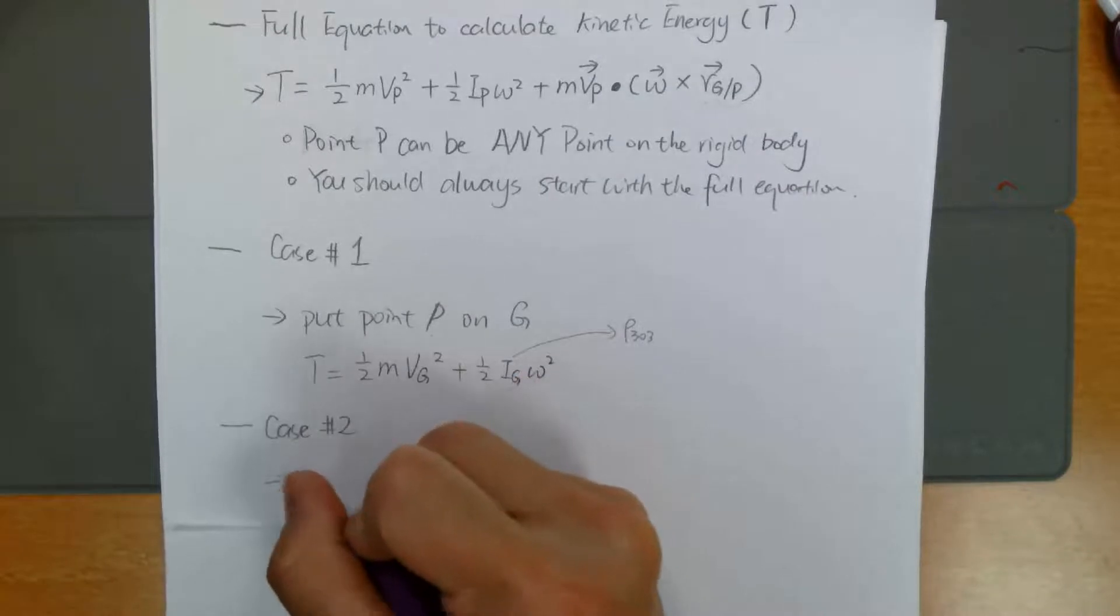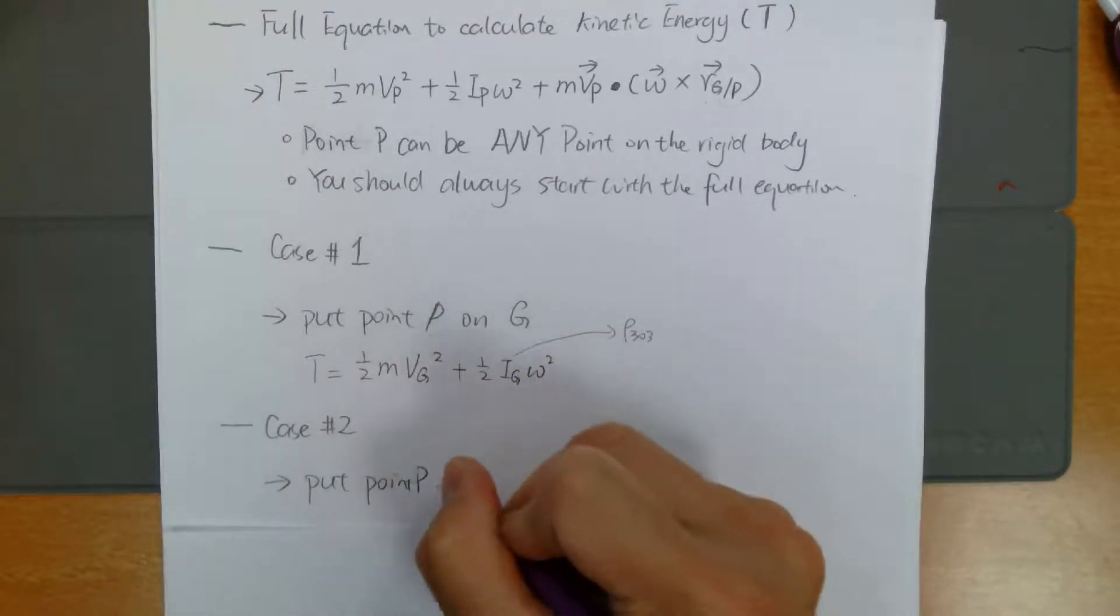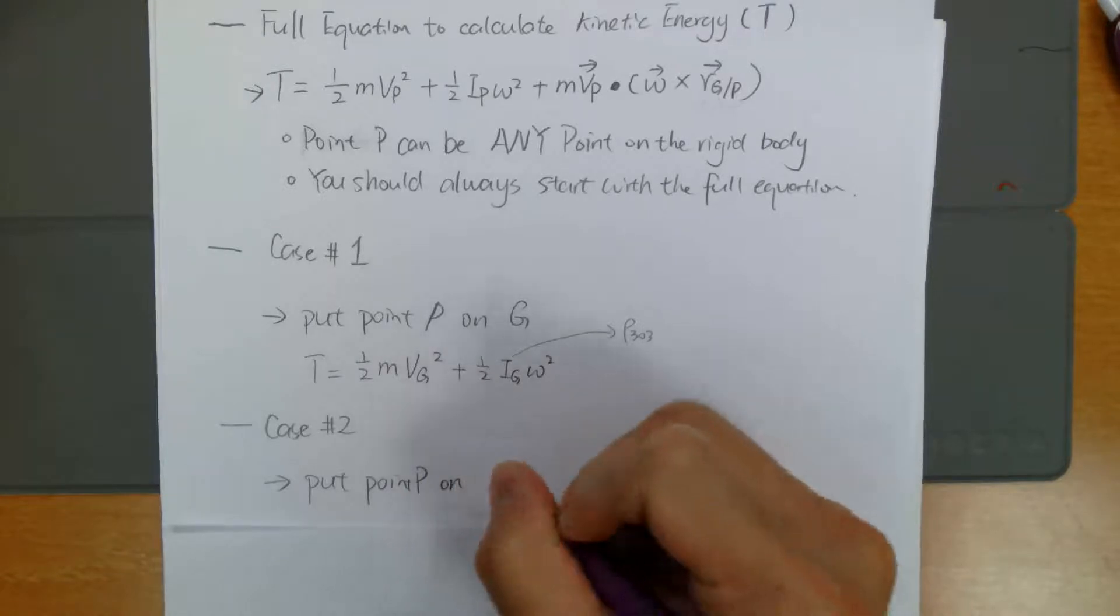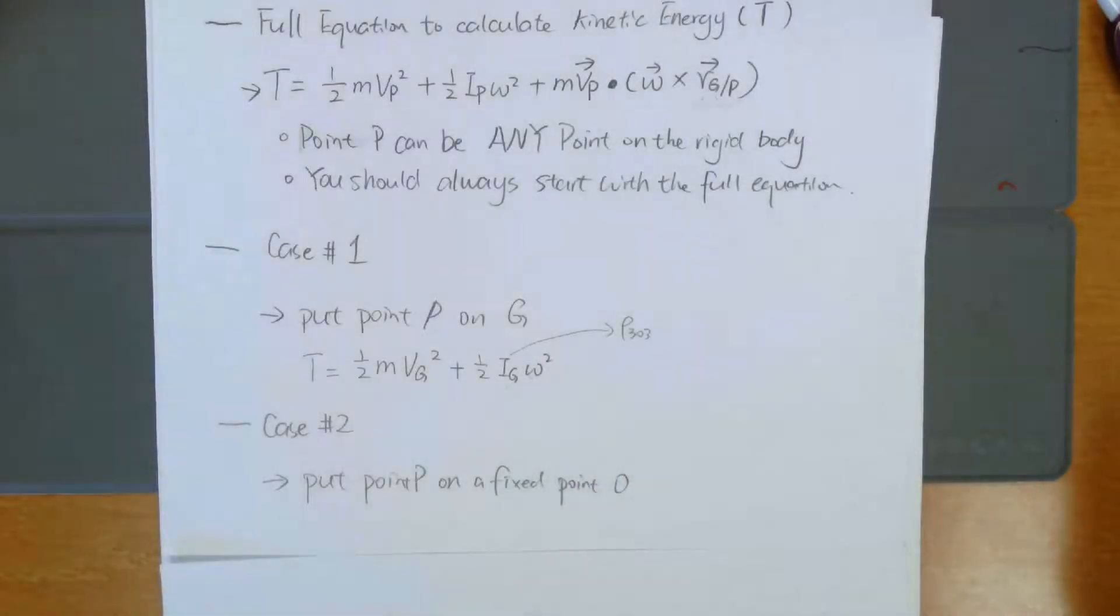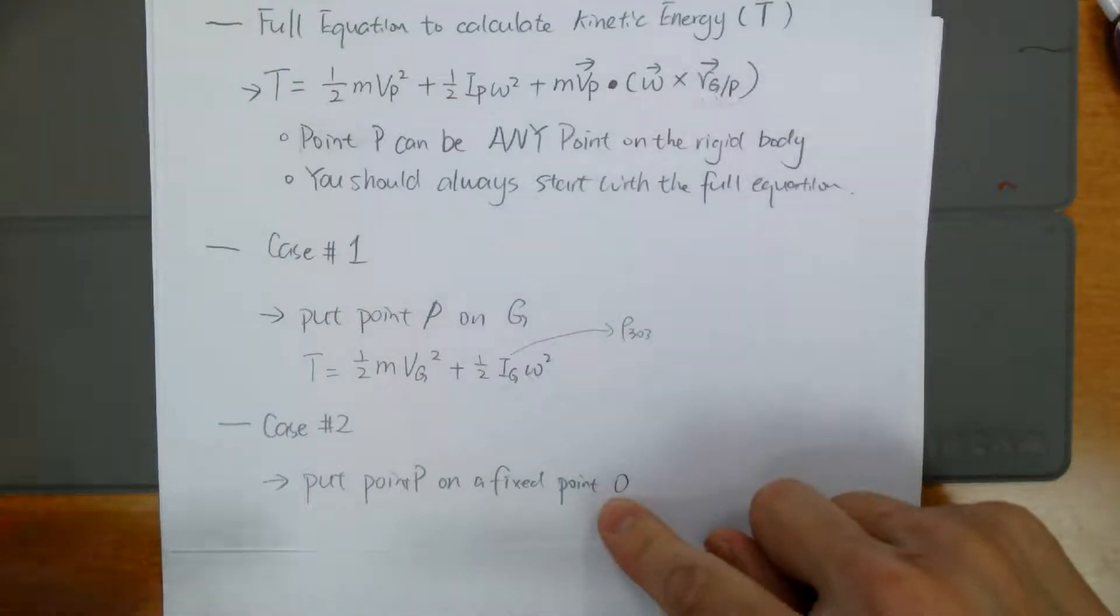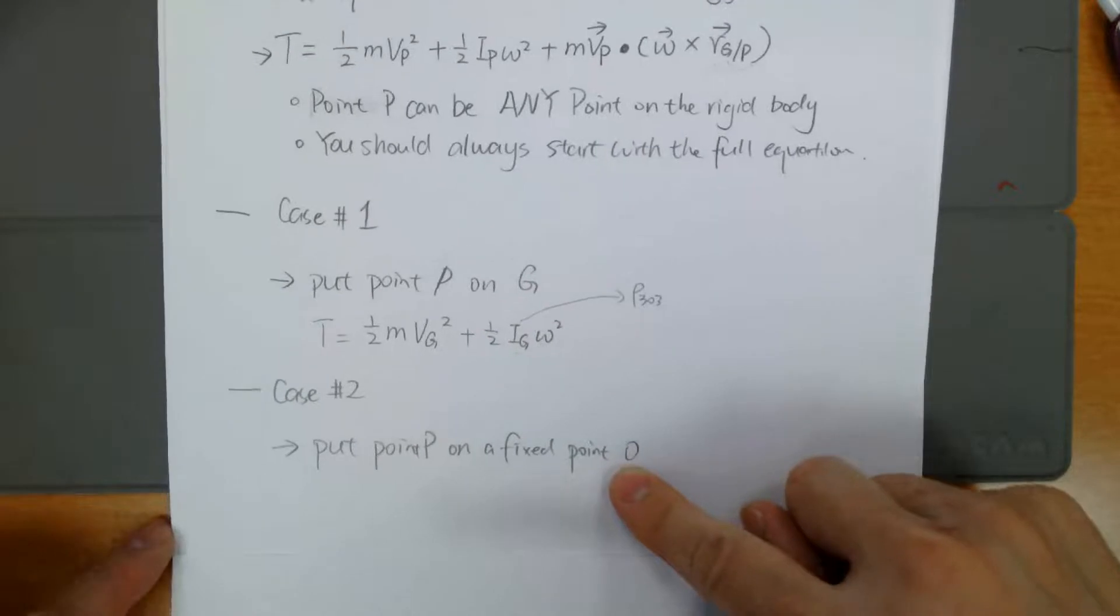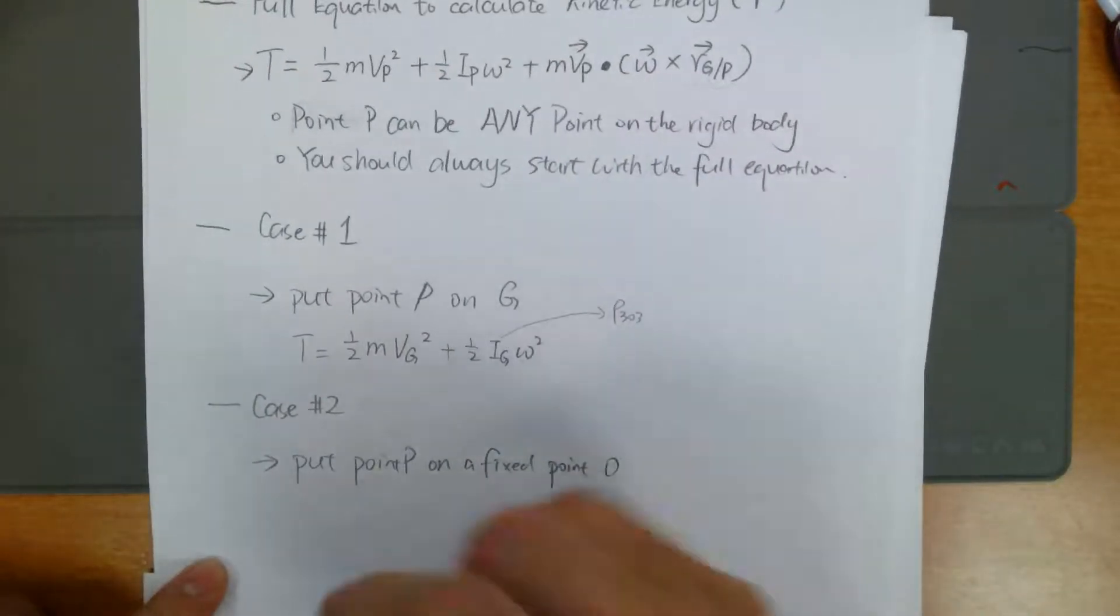So which point is going to give you zero velocity? That would be if you put point P on a fixed point. Let's assume that fixed point is point O. And if you have a fixed point on your rigid body, this is probably not the case for all problems. There's only certain problems with a fixed point on the rigid body.